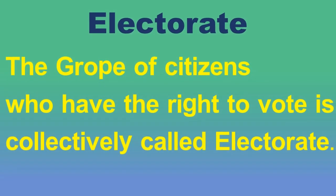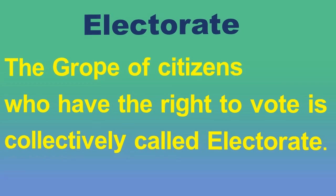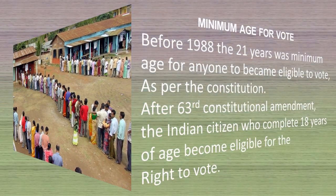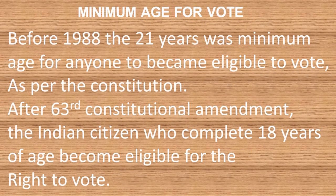The group of citizens who have the right to vote is collectively called the electorate. These are the voters casting their votes. What is the minimum age for voting?